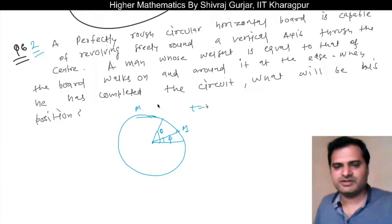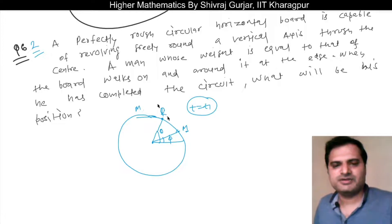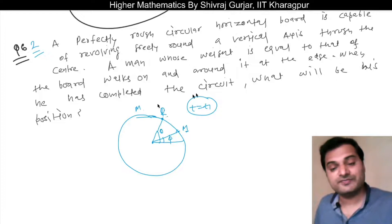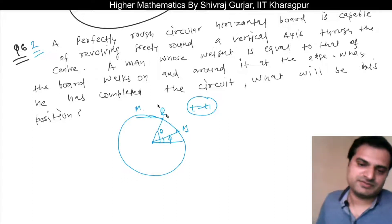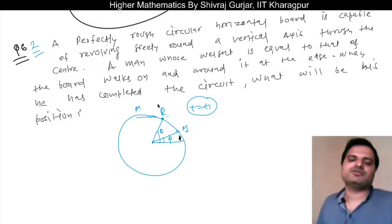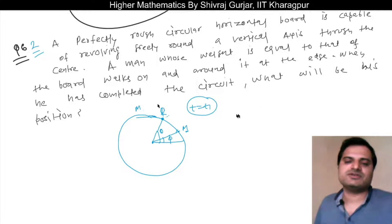At time t equals t1 this is the position. So we have to tell that when the circuit is completed, what will be the position. When the man comes back, both the man and the board will have moved. We need to find theta in space.